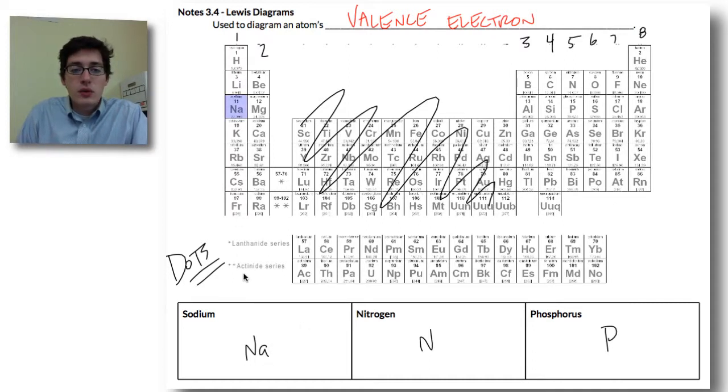Sodium, again, highlighted on your screen, is in group number one, so that means I have one valence electron, and we just put a little dot right on top, and that's all it is.